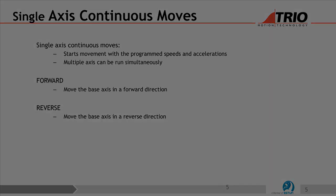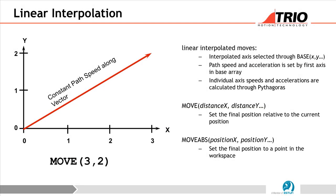We look at interpolated moves. Interpolated moves axis select through BASE x, y, z. The path speed and acceleration is set by the first axis in the base array. If you have the MOVE with 3 and 2, that's the distance and what is the base that you put in. Individual axis speeds and acceleration are calculated to quit together - you know what is vector speed, and by speed over distance you get the acceleration.